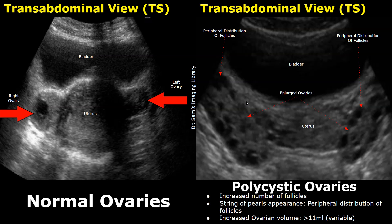These are transabdominal images in the transverse plane showing both ovaries and the uterus in the middle. This is the bladder. You can see both the right and left ovaries in the image. The image on the right shows bilateral polycystic ovaries. Numerous anechoic follicles can be seen in a peripheral distribution and both ovaries are enlarged. You can compare this appearance with normal ovaries on the left side.